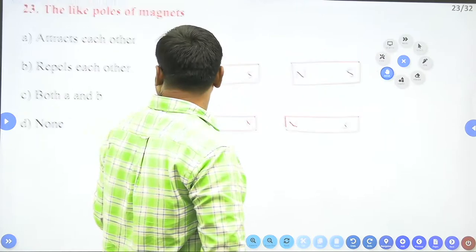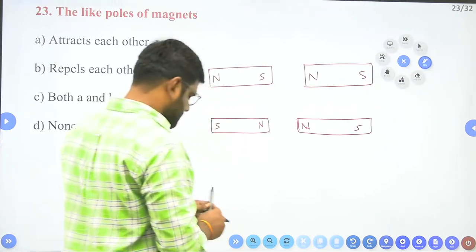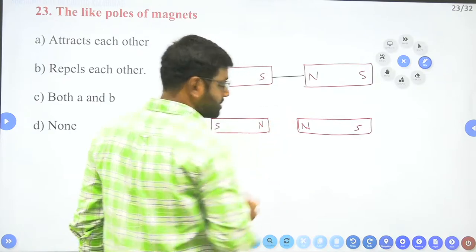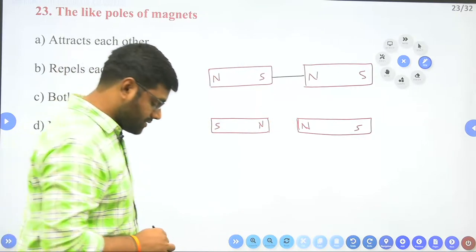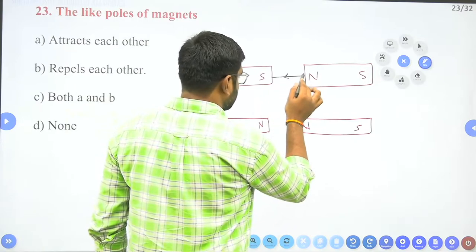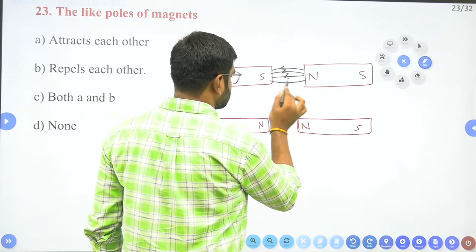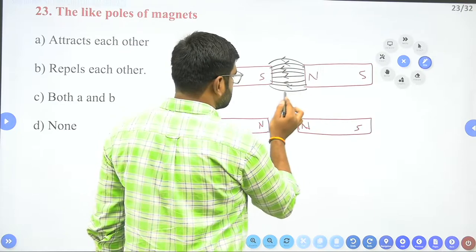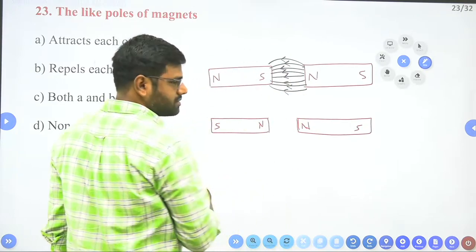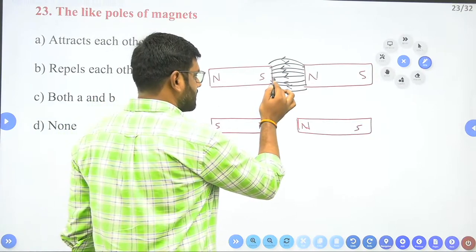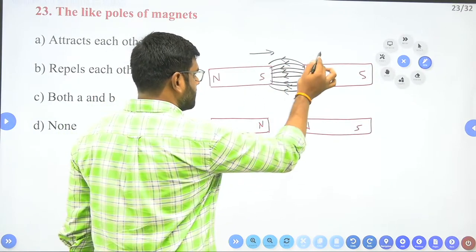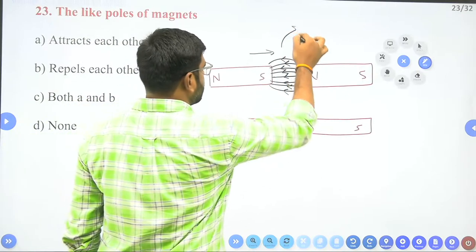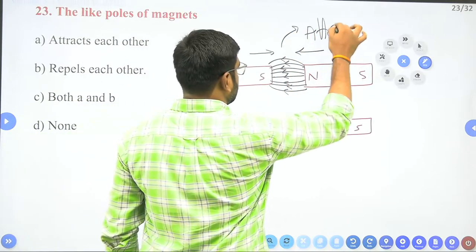As we know from magnetic field lines, they start from north to south outside the magnet. For unlike poles, the magnetic field lines are in the same direction and they attract each other — so unlike poles experience an attractive force.